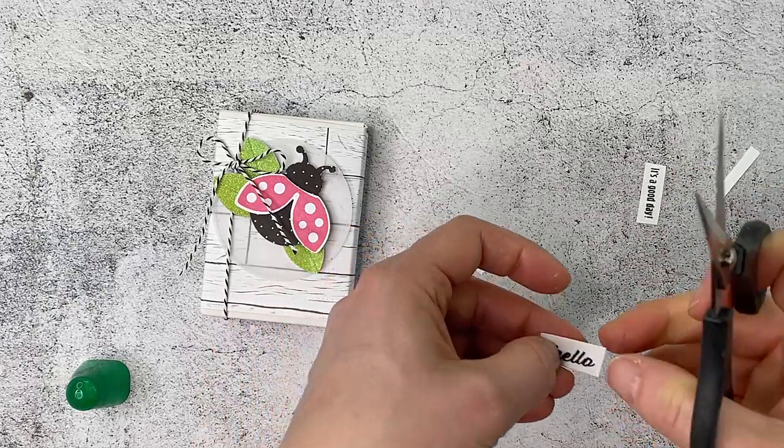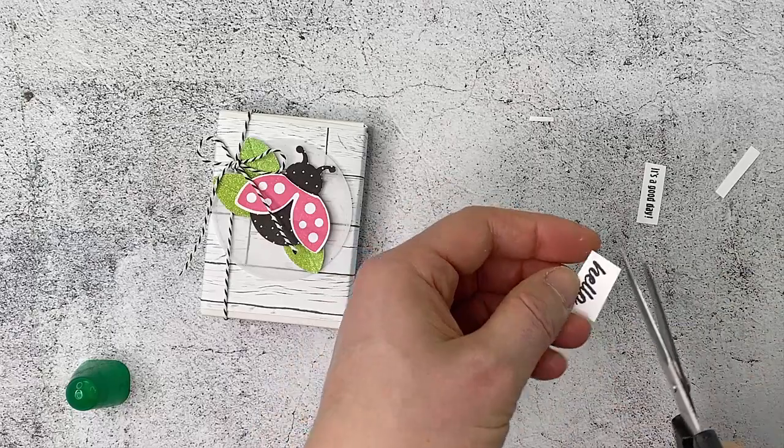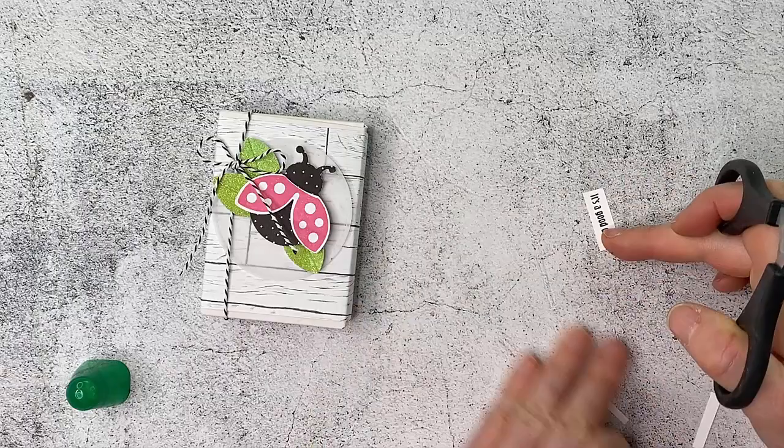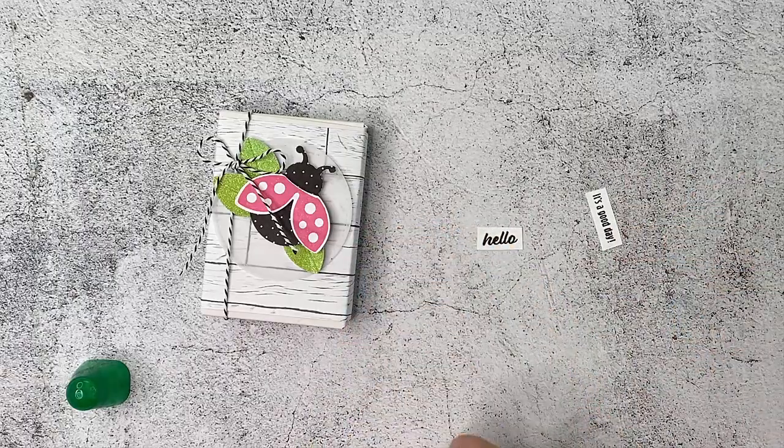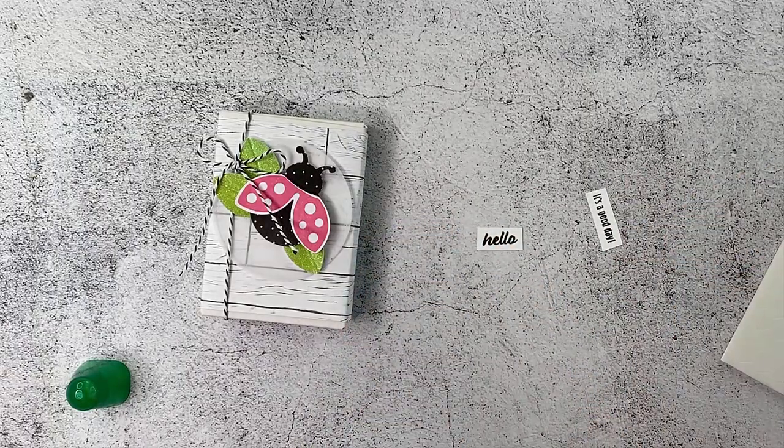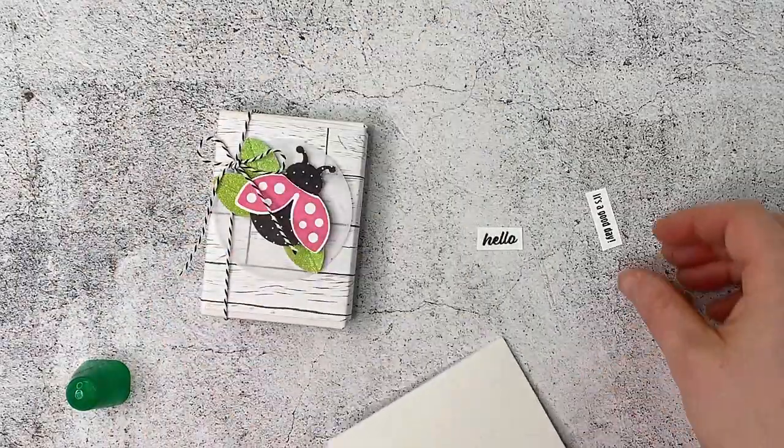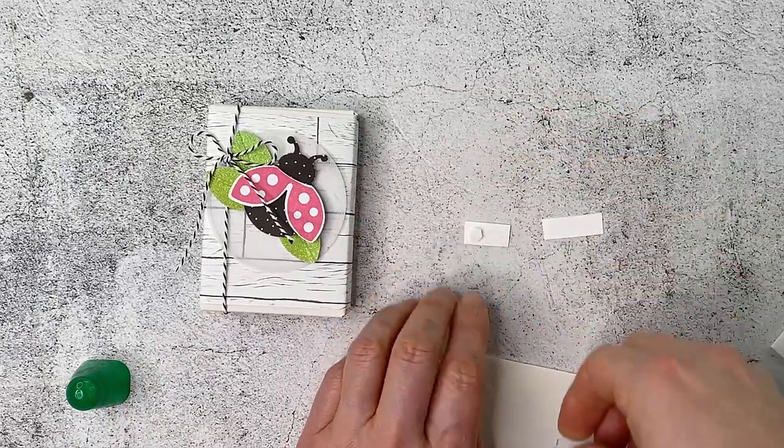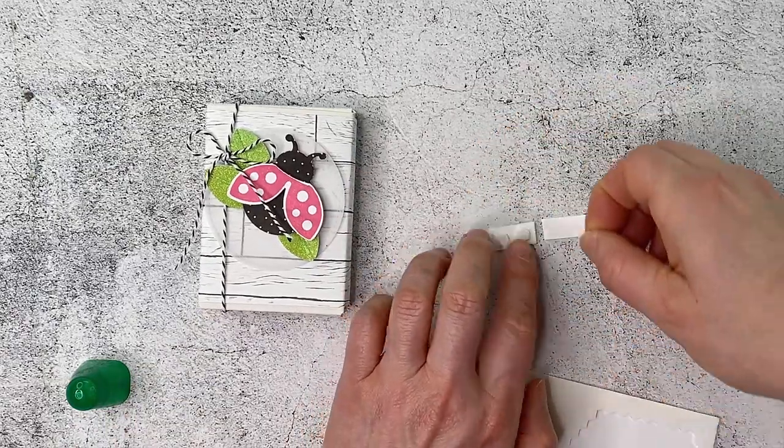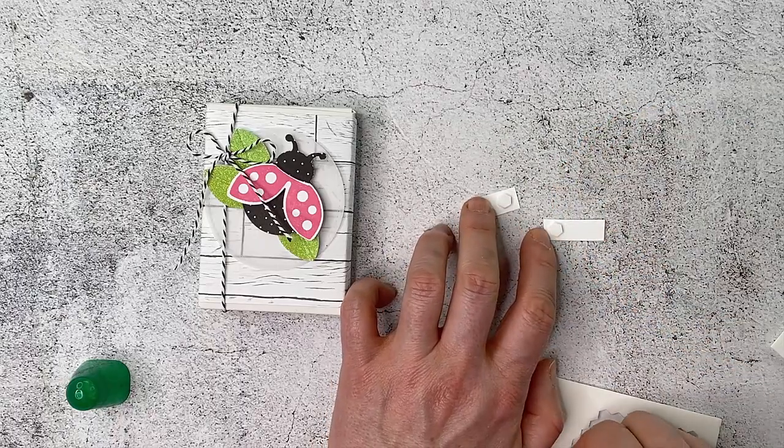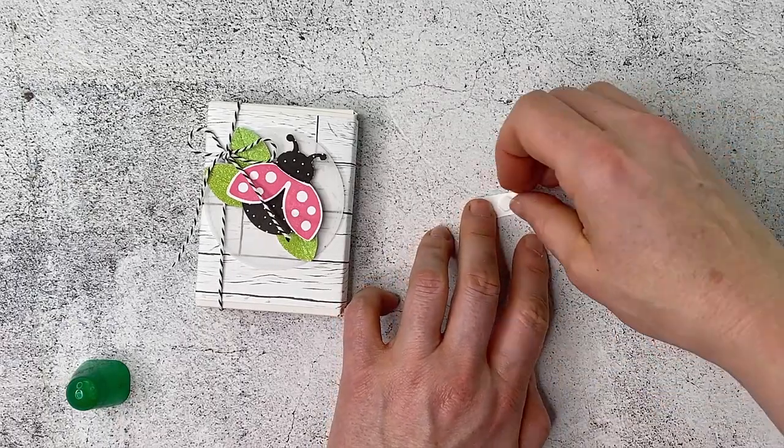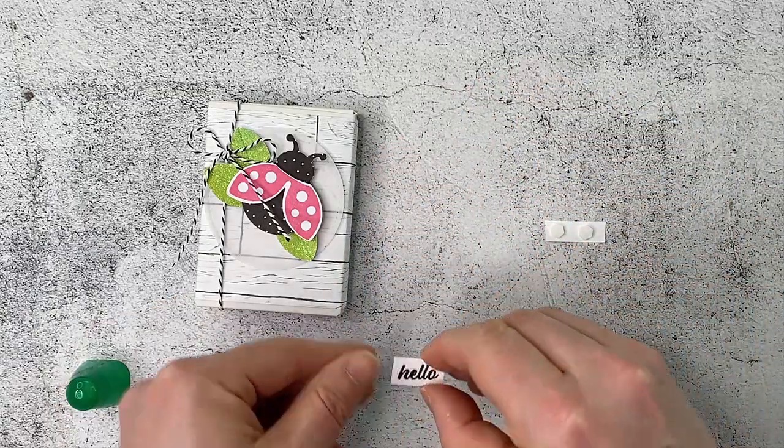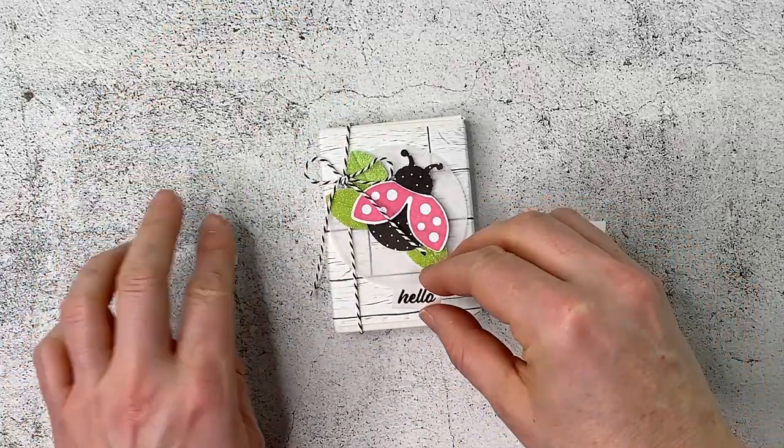And then just trim that one a little tighter. Okay let's get rid of all the scrappy bits and then I want to use my mini dimensionals and put some dimensionals on the back of those and that's going to actually hold our twine down so that when someone opens the box the twine just doesn't fall to the floor completely. It's at least held on to the box or they could just slip it off the top and then flip it back on.